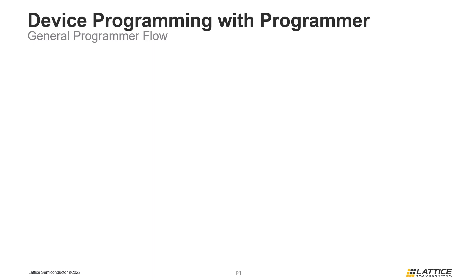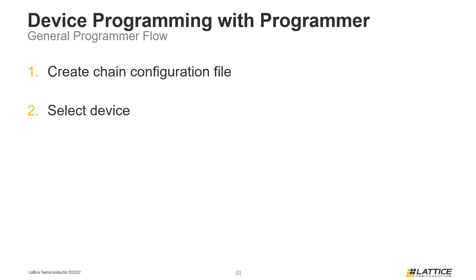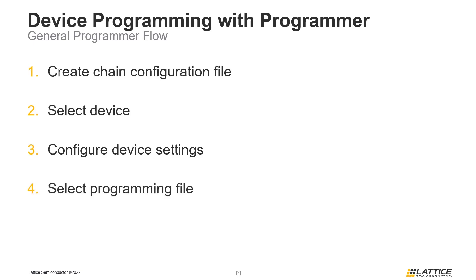The first step in this flow is to create a chain configuration file. This file contains the settings for a programming session and is automatically generated when the Programmer is launched from Radiant. The second step is to select a device, then configure the programming settings for that device. The final two steps are to select a programming file and program the actual device.